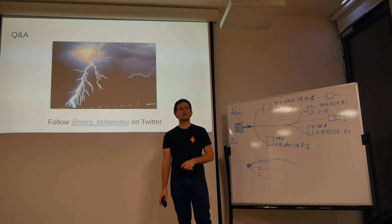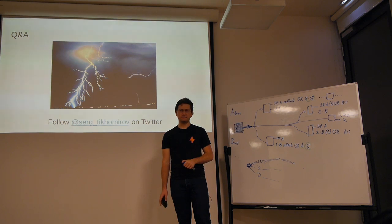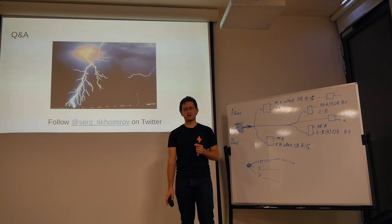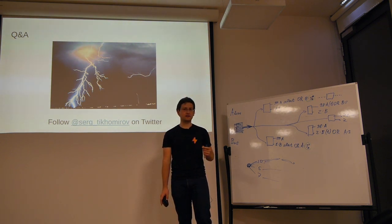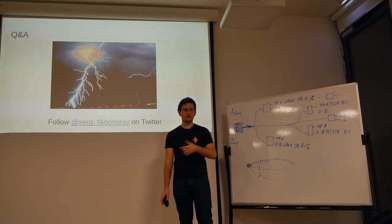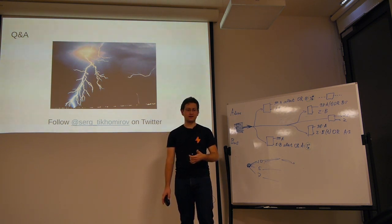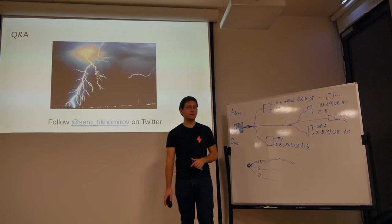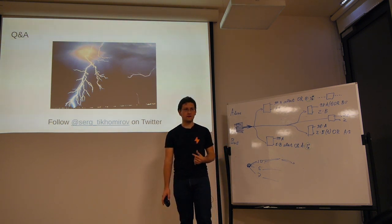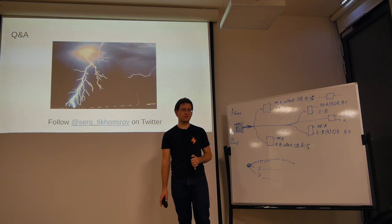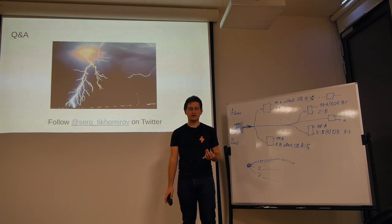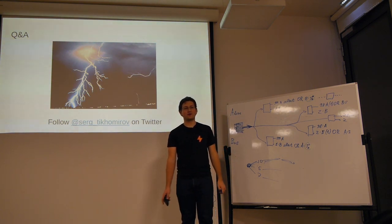If you try to pay via Lightning and nothing works through any hub or channel, ultimately we have to fall back to the chain. There are proposals to encode a fallback Bitcoin address into the Lightning invoice — so if I want you to pay me with Lightning, I send you an invoice that says: try to pay with Lightning, but in case you cannot, here is my on-chain wallet address. It might not be fully implemented yet in actual code, but it's an obvious idea.